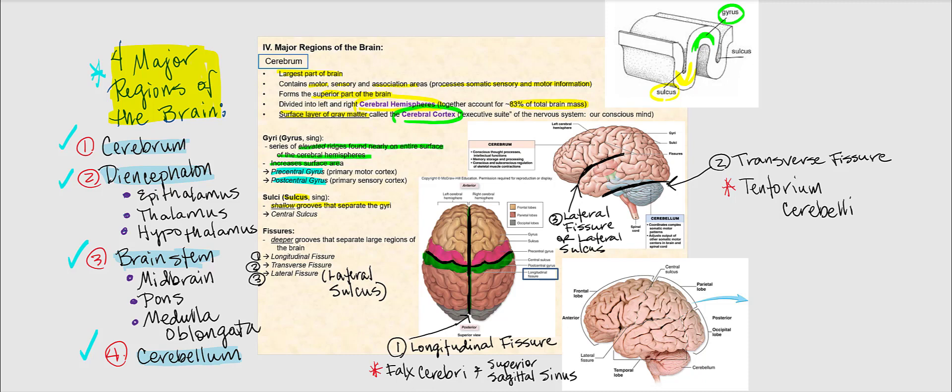The main sulcus we are going to be focusing on is the central sulcus. Then we have fissures, which are deeper grooves that separate large regions of the brain. We have three fissures: the longitudinal fissure, the transverse fissure, and the lateral fissure, which is sometimes referred to as the lateral sulcus.